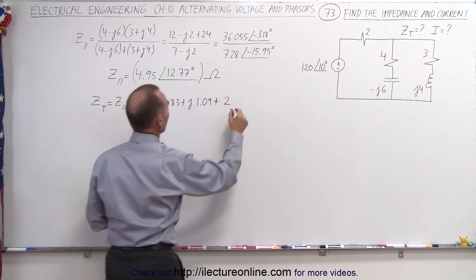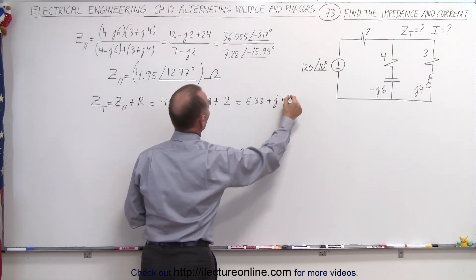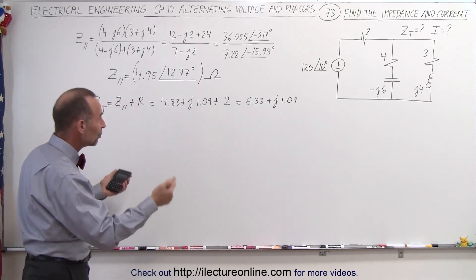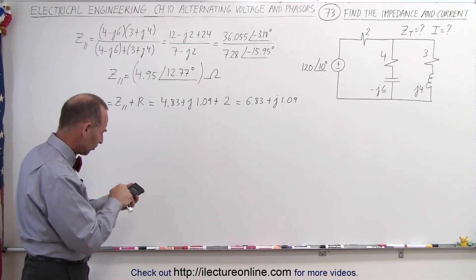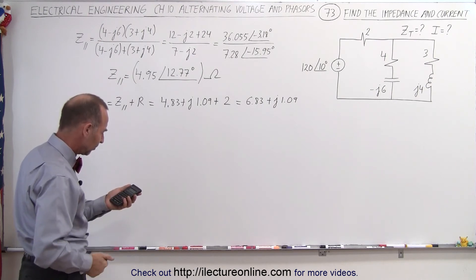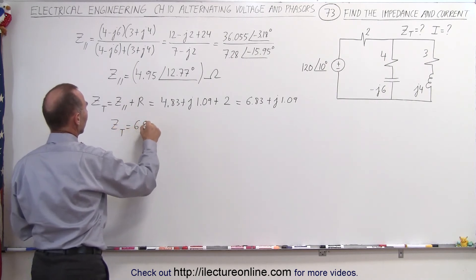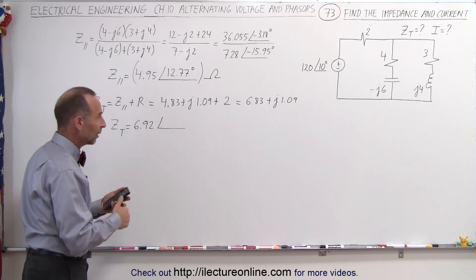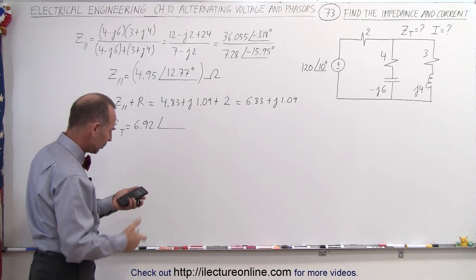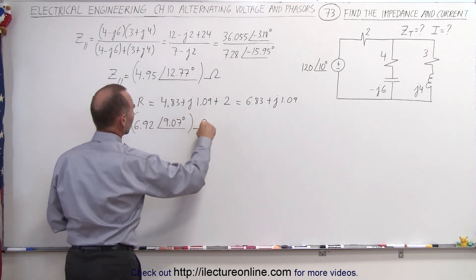We get 1.09, and we add the resistance — which is a real value of 2. Adding those together we get 6.83 plus J1.09. Now converting back into magnitude and phase angle: square root of 6.83 squared plus 1.09 squared gives us 6.92. So Z total equals 6.92 ohms, with a phase angle — inverse tangent of 1.09 divided by 6.83 — equals 9.07 degrees. That's also ohms, because that's impedance.